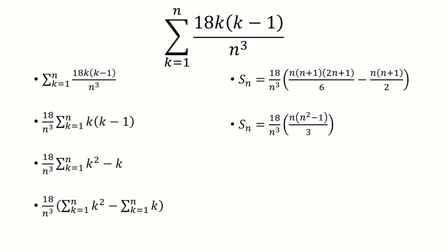We will simplify, combine these two fractions. We get n times n squared minus 1 over 3.